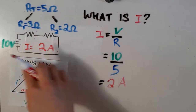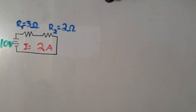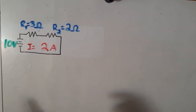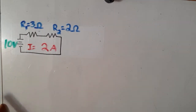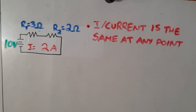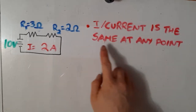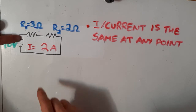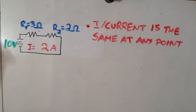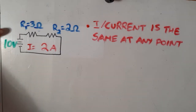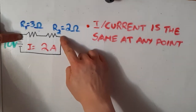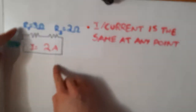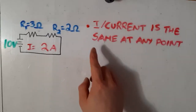Let's take this one step further. Current, or I, is the same at any point in a series circuit. So if I took a multimeter and measured the current flow at any section of this circuit, it would be 2 amps — regardless of where I'm measuring. Current is the same at any point.